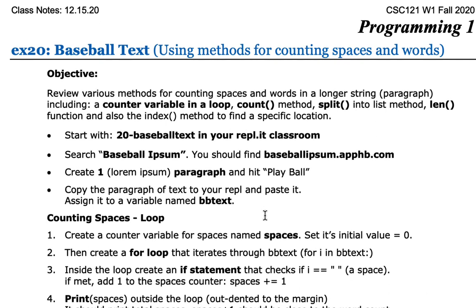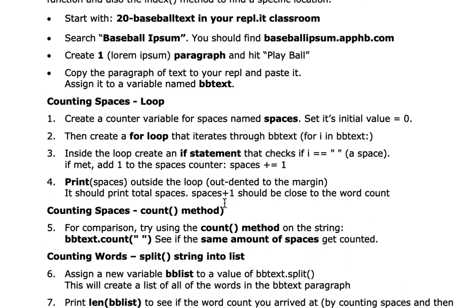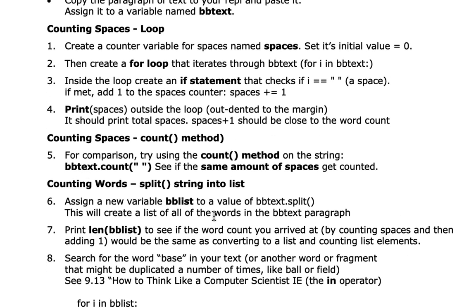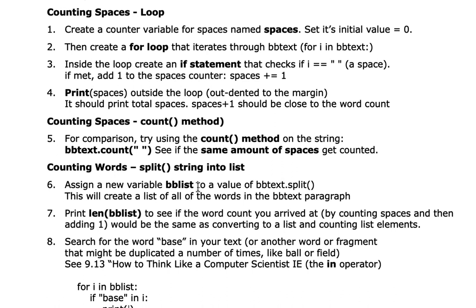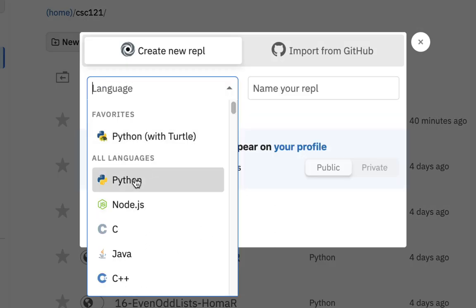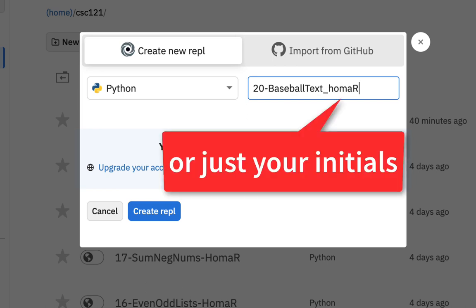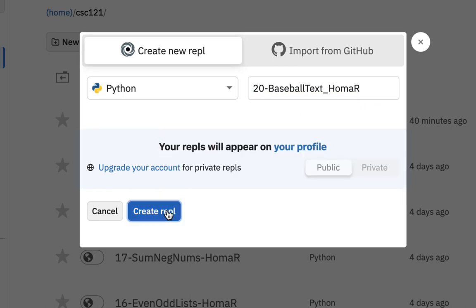We're going to make a variable called bb_text, then go through some methods of counting words — first by counting spaces, then adding one to get the word count. We'll use the count method, and also the split method, to explore a couple of these approaches. It's regular Python, not with turtles, so just call it '20 baseball text' and hit create repl.